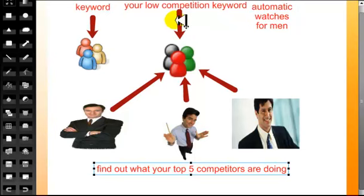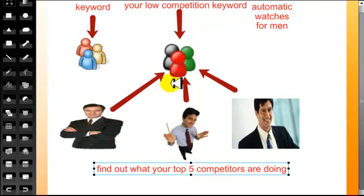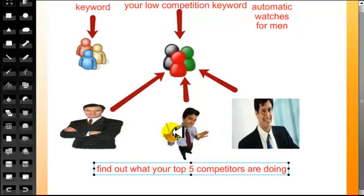Once you've found your keyword and you know the group of people you're trying to get to your website, you need to find out what your top five competitors are doing right now to get traffic. You want to find out what they have done to beat you in the top five rankings for this particular keyword. One of the things you can do to gain information is simply type your keyword into Google and see what comes up.